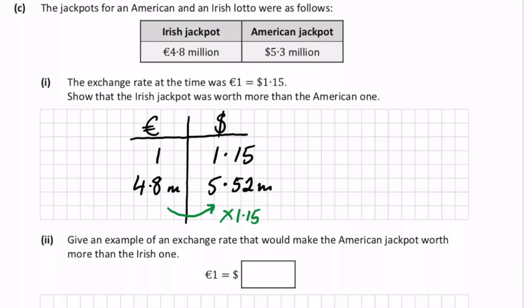And if we compare these, if we compare the 5.52 million dollars with the 5.3 million dollars, we see that the 5.52 is bigger than 5.3. So this proves that the Irish lottery is bigger.